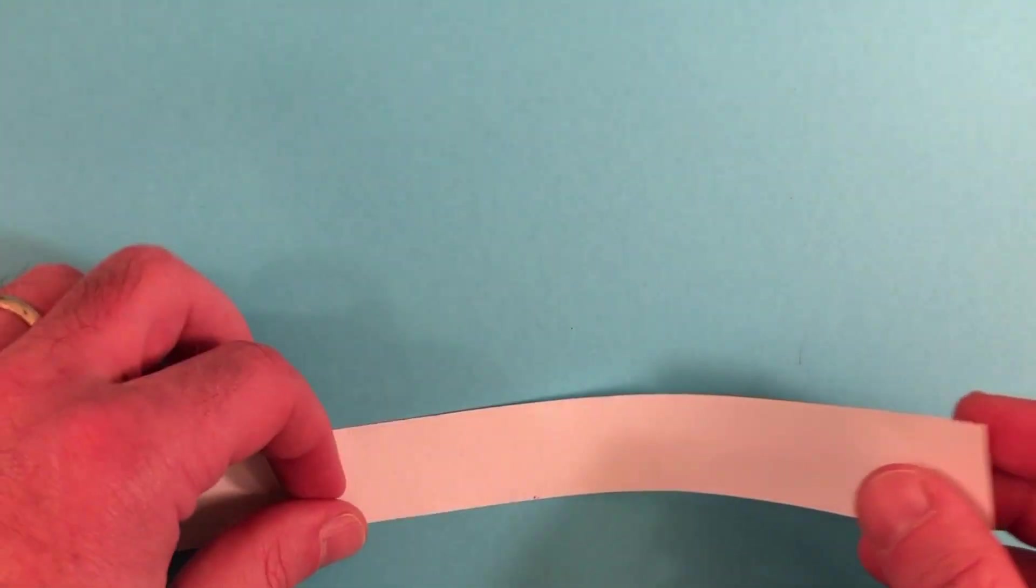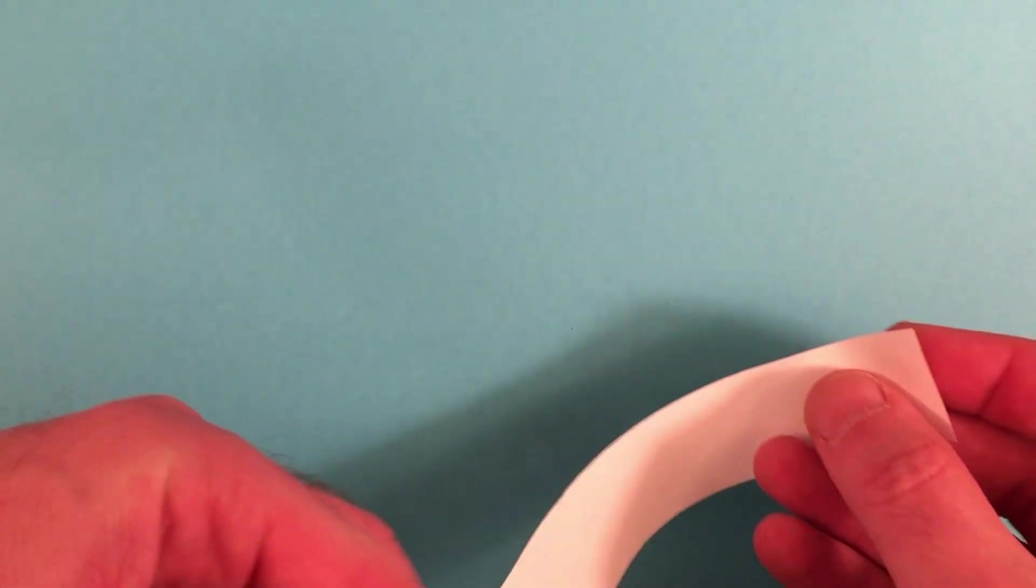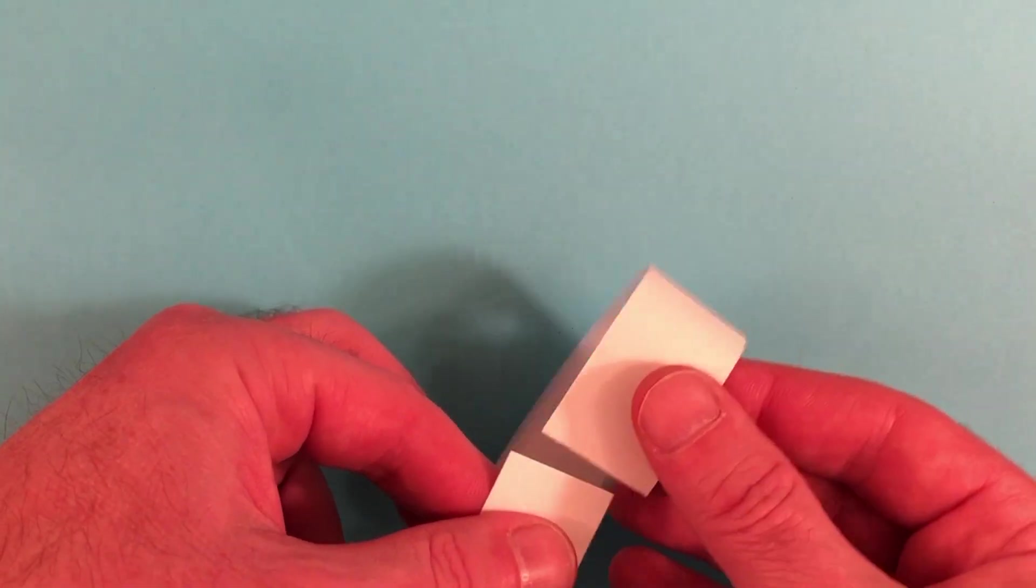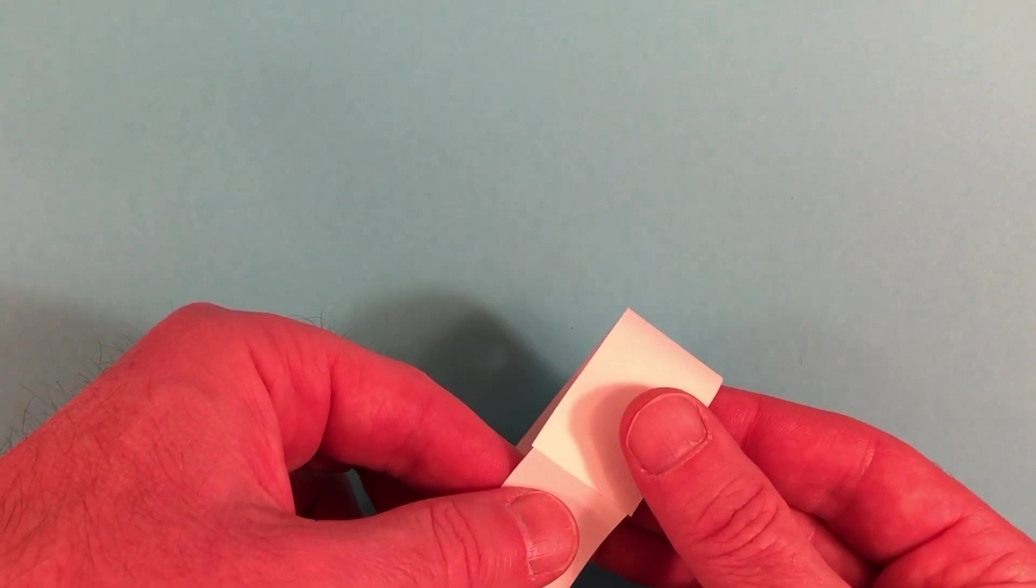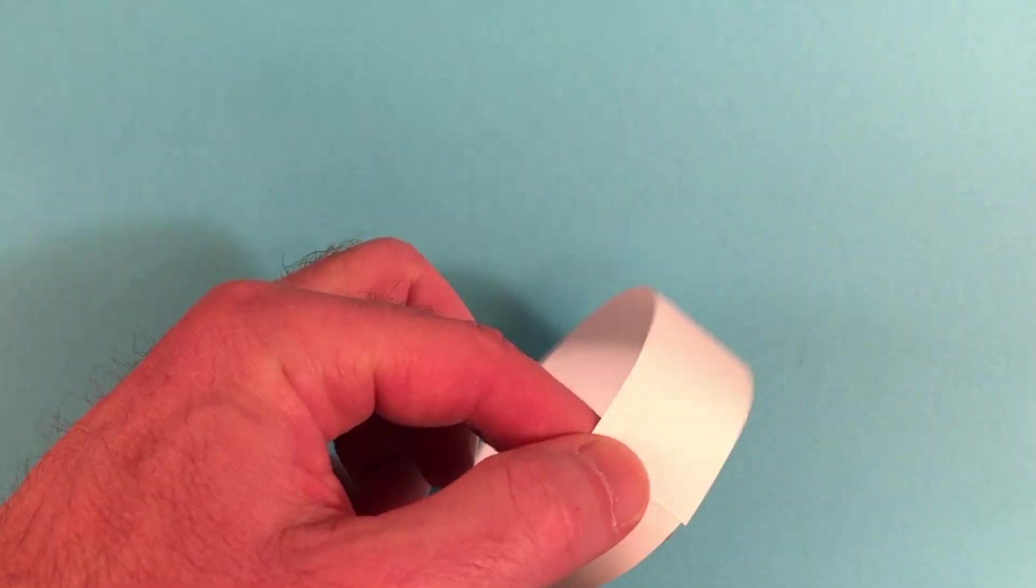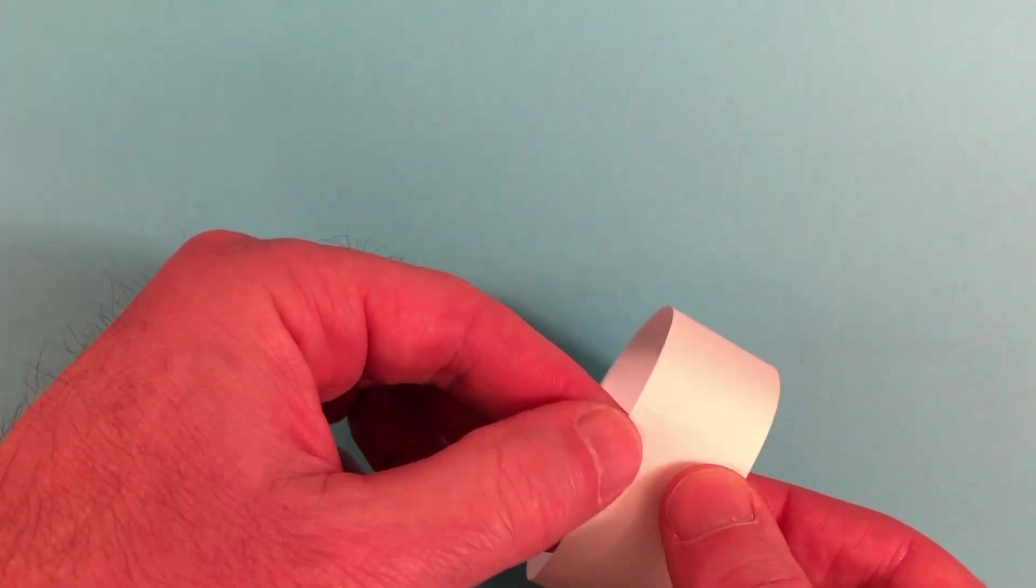Now we are going to tape one end of this strip of paper to the other, making a ring. When we tape two ends together, we are sealing them so that there is no longer an edge here. There are only edges on the sides.